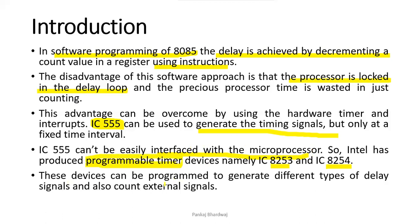These devices can be separately programmed to generate different types of delay signals and also to count external signals. When using the 8253 or 8254 programmable interval timer, we generate timing signals, control signals, and delay signals — not using the 8085 processor, but using a dedicated IC to calculate time intervals, counting, and delay signals.